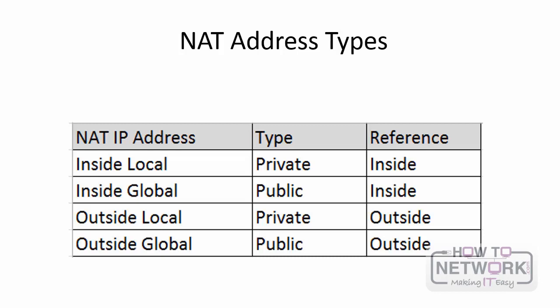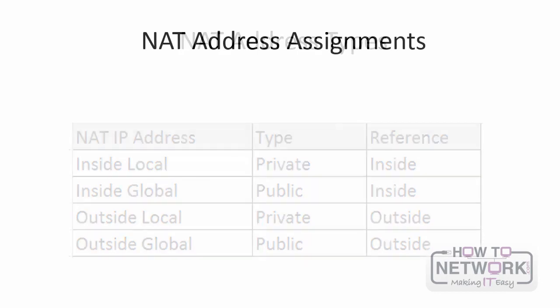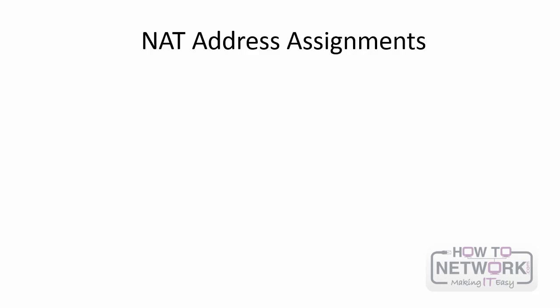As a memory aid, remember that inside always refers to an inside device, outside always refers to an outside device. When you see the word local, think of that as private — a private IP address not routable on the internet. And global should remind you of the internet, because global addresses are IP addresses routable on the internet. An inside local address can be randomly assigned an inside global address from a pool, or specifically assigned via static configuration.